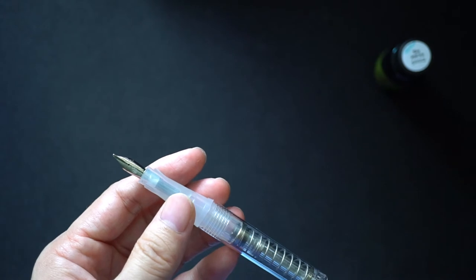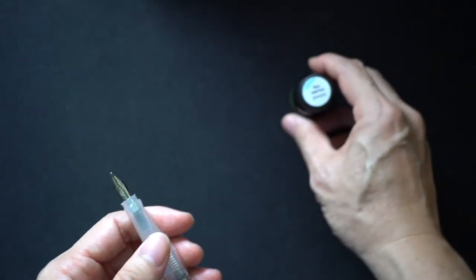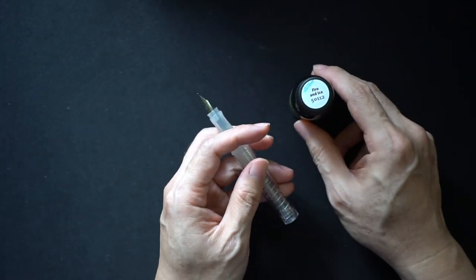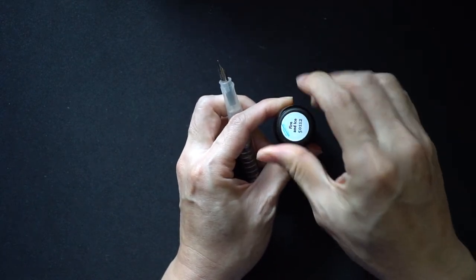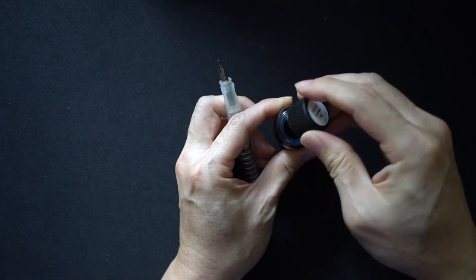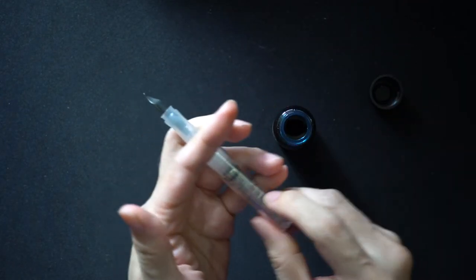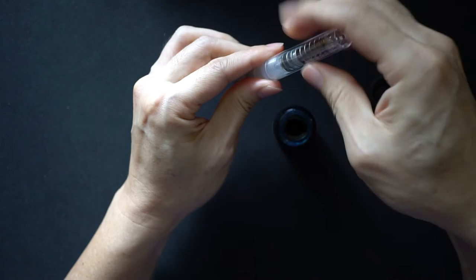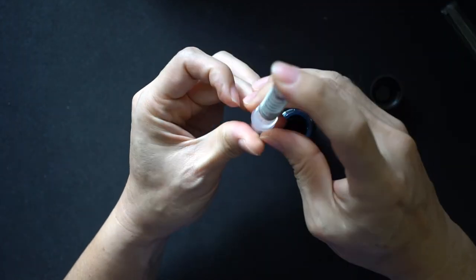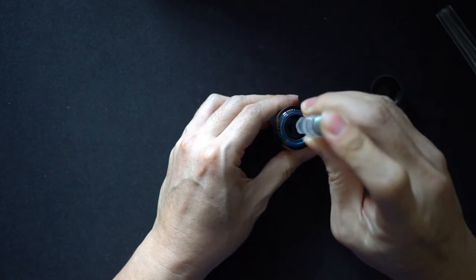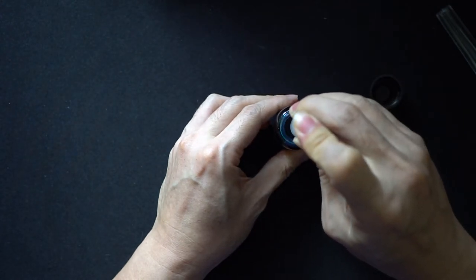I'm going to fill up this pen with Robert Oster's Fire and Ice. Thought it would be nice for a stub. And just remembering how the mechanism works, it would just be depressing this whole part of the pen like this, dipping it into ink.